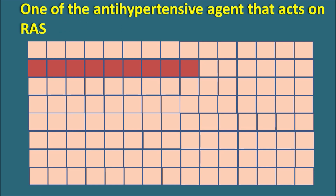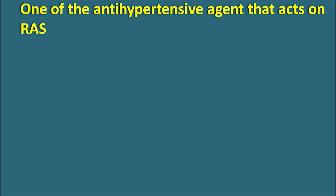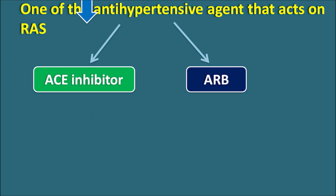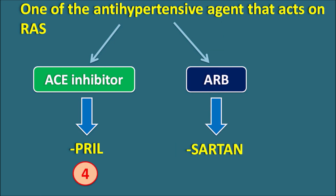The first block: one of the antihypertensive agents that acts on the renin-angiotensin system. The selected area has nine blocks, so we fill in a drug name with nine letters. We have two main categories — ACE inhibitors and angiotensin receptor blockers (ARBs). ACE inhibitors end with the suffix PRIL (4 letters), while ARBs end with SARTAN (6 letters). Since we need 9 letters, SARTAN with only 3 prefix letters is not suitable — most ARBs have 4-letter prefixes like OLME-, TELMI-, or IRBE-.